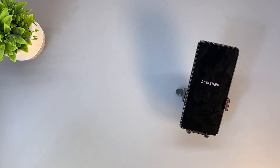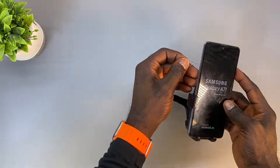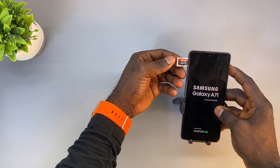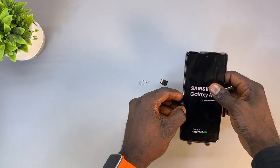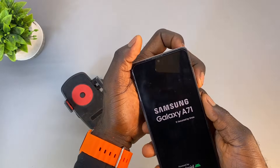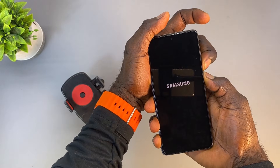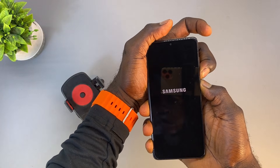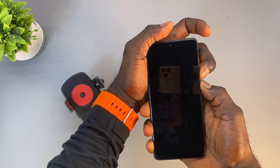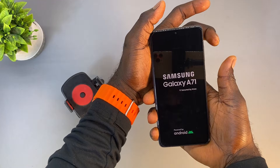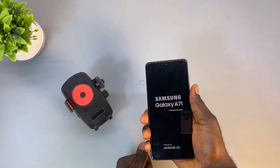When your phone automatically restarts and reaches the logo screen, eject the memory card slot and remove the SD card. Then press and hold the volume down and power buttons to restart the phone and see if the phone boots to the home screen. Release the buttons once you see the Samsung logo. The phone should restart normally and the automatic restart or stuck-on logo should stop now.